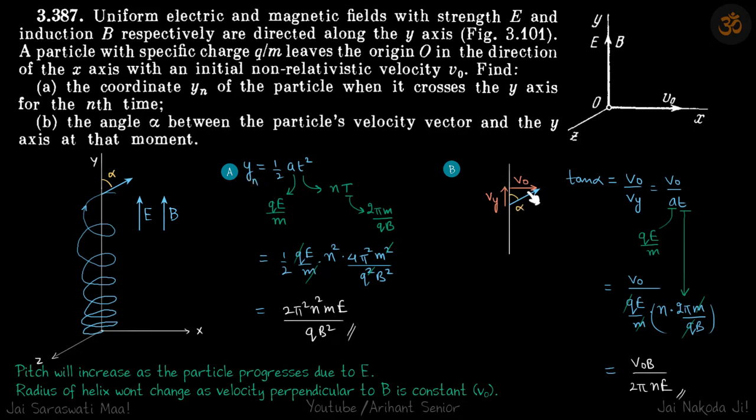The angle α is between the velocity vector and the y axis. The velocity in xz plane will never change so it will remain v0 and the velocity in y direction will change because of electric field and its value will be at. So tan α is v0 by vy and vy will be at.